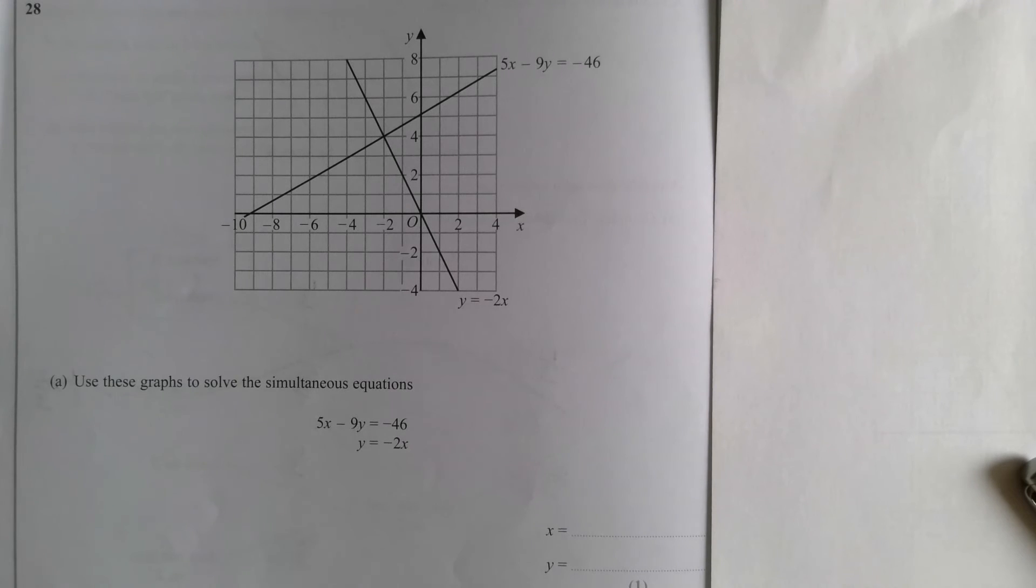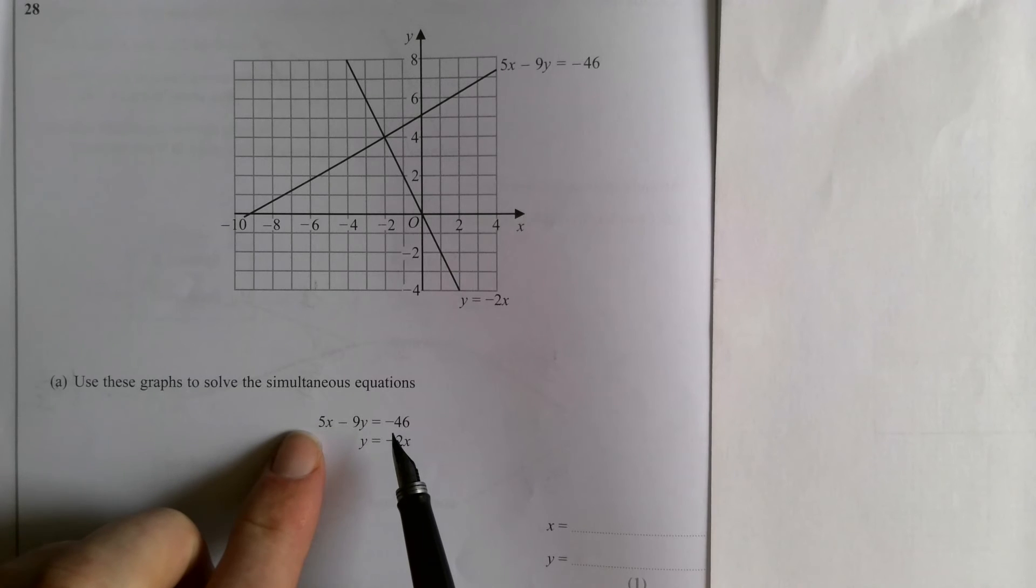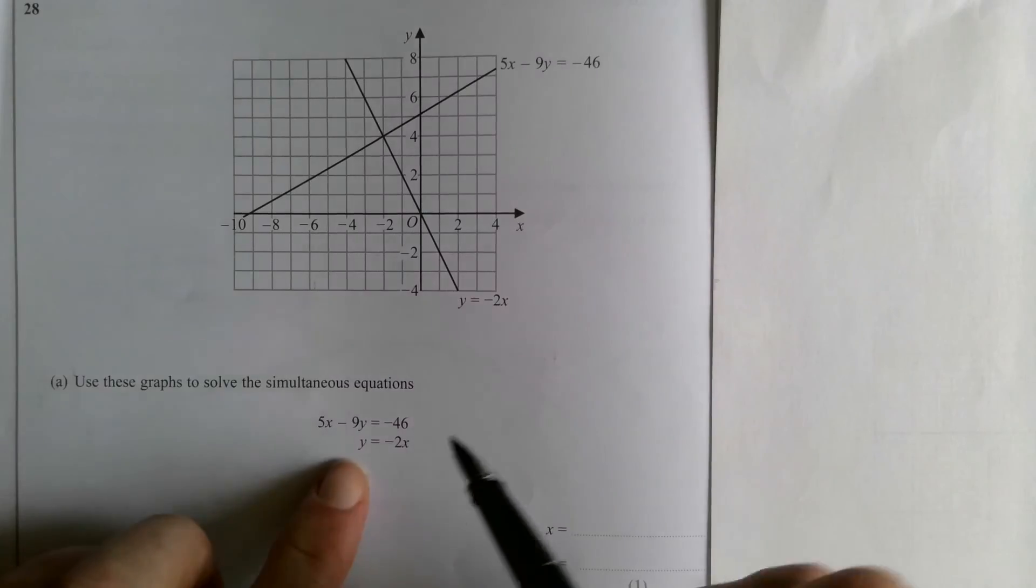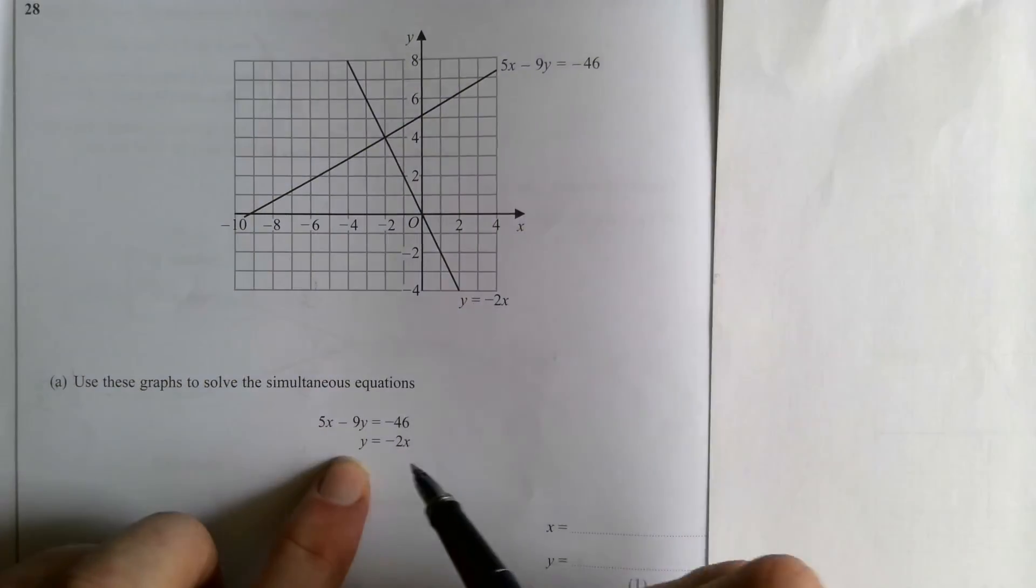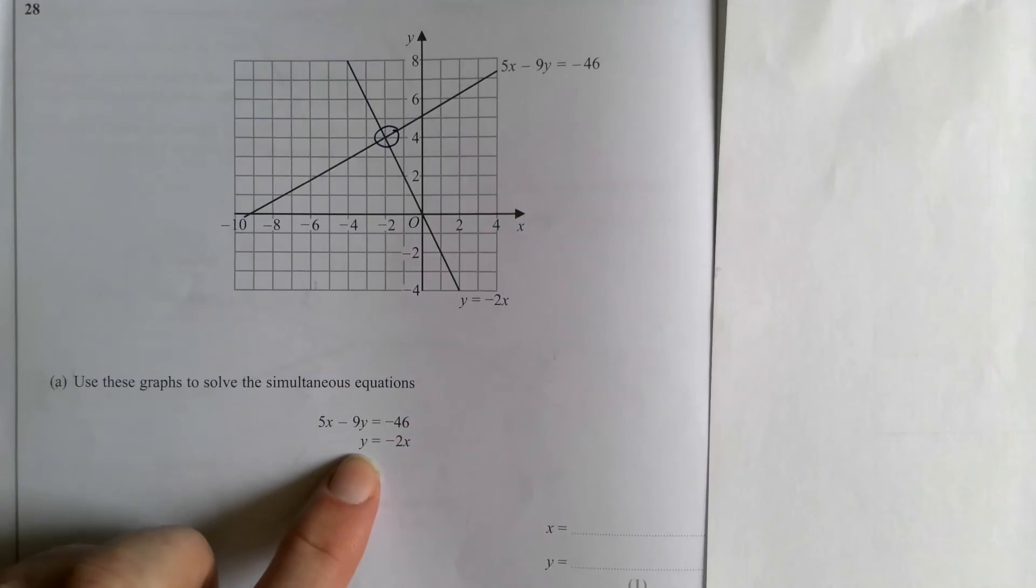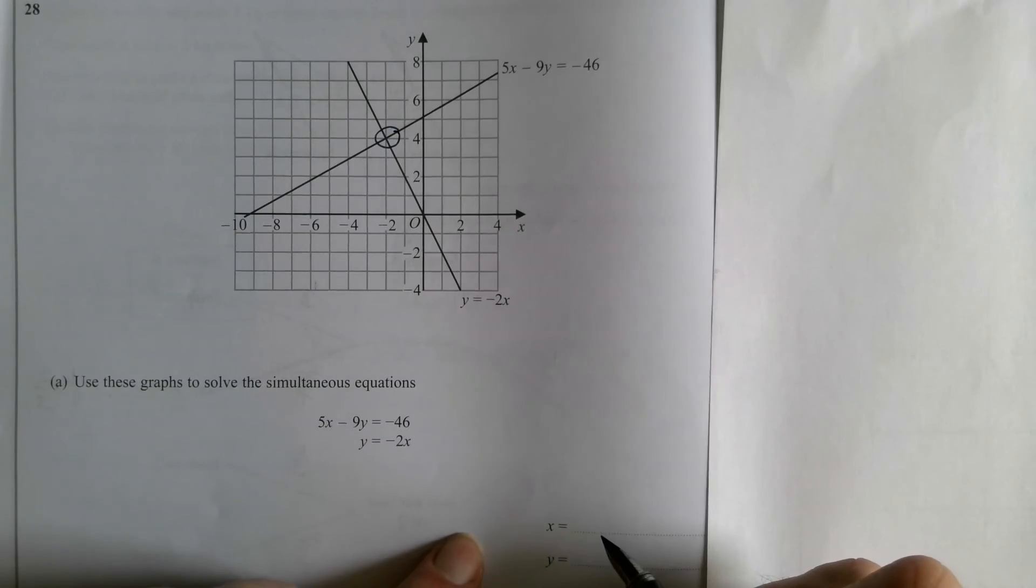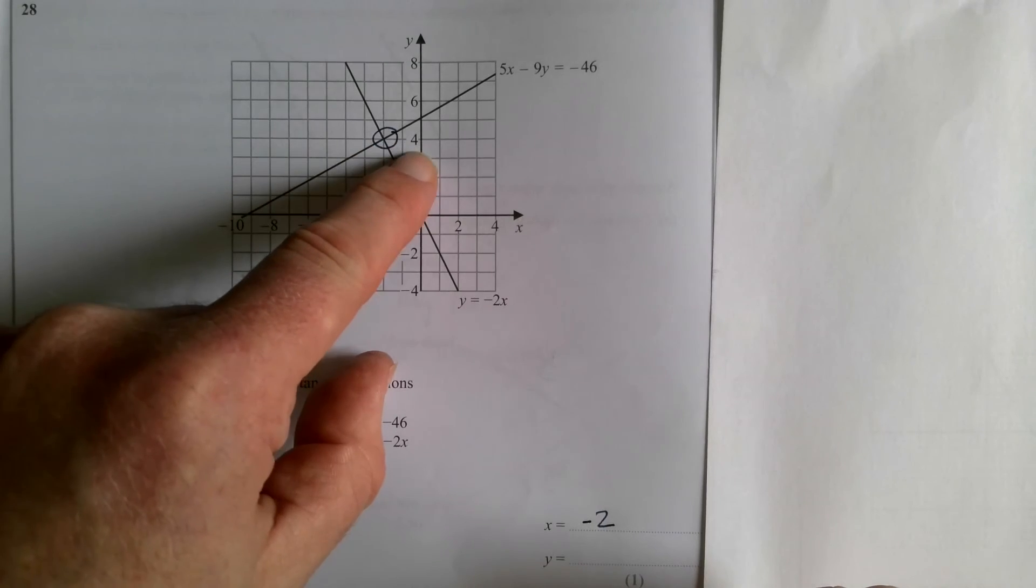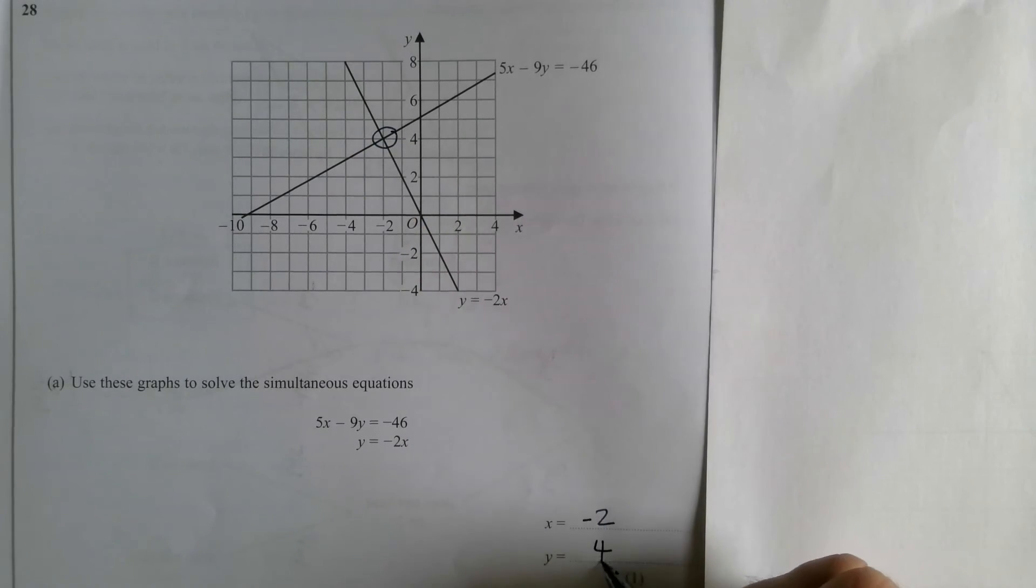Question 28. Looks difficult, isn't really. Using the graph to solve the simultaneous equations. It wants a value of x and a value of y. What it means by solving is what value of x and y works for both equations? Well, this equation is given by this line. They've done it for you. This one by this line. Where they cross is the only point at which your x value and your y value are the same. So the x value there is negative two. And then going up the stairs, your y value, your y coordinate is four.